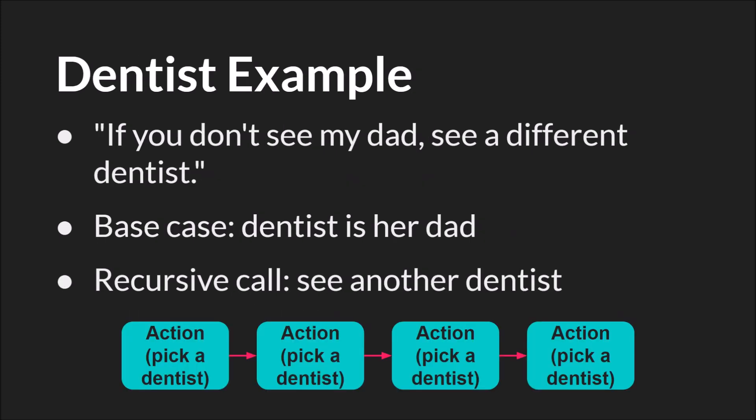There's an ad that ends with 'if you don't see my dad, see another dentist.' Here you have a recursive function call. The base case is that the dentist is her dad — if the dentist is her dad, you stop. Otherwise, you see another dentist — that's the recursive action. You pick a dentist, is that dentist her dad? No. Pick another dentist. Keep going until you finally pick the dentist that is her dad. We can actually do this in code in GameMaker Studio 2.